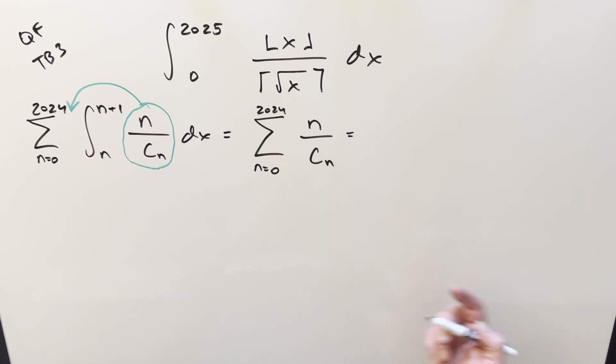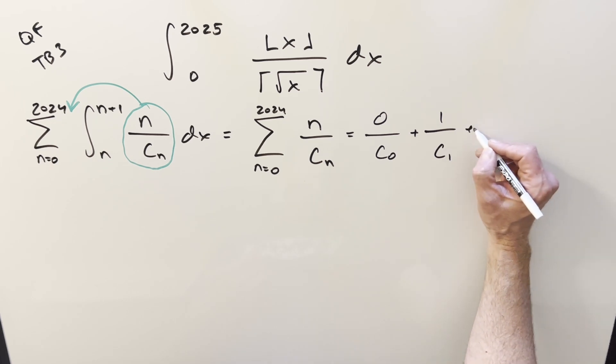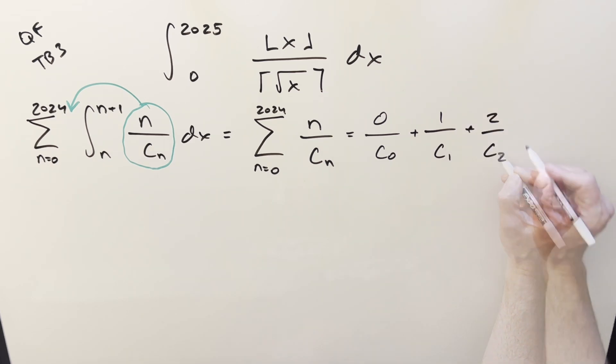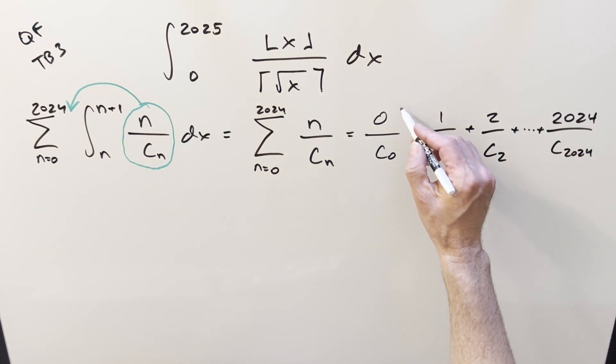So now we've got a pretty simple looking series. We can start expanding out some terms, just starting at zero. The confusing part is we don't quite know what these c's are yet. But the numerator is just going to be counting up from zero. Eventually this thing is going to get all the way to 2024, and we'll have our c 2024. Now, we want to find a way to add all this stuff up. At least one thing we know is this is just going to be a zero, so we don't have to worry about that.